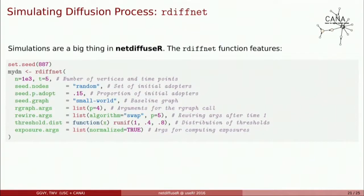We can also simulate with NetDiffuser. Here I'm calling the rdiffnet function and pausing the parameters so you can see what kinds of things you can do. In the first line I'm setting the number of vertices, the number of time periods. Then you can set how you want the seeds — the first adopters — to be distributed (here I'm setting it as random, but you can pass a vector). You can set the probability of adoption for the first adopters, which class of graph to generate (in this case a small world graph), random graph arguments, rewire arguments, threshold distribution, exposure arguments, and more.